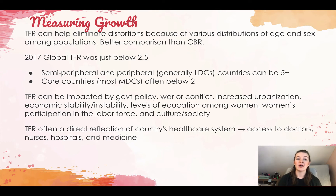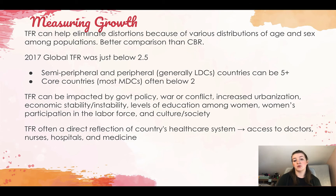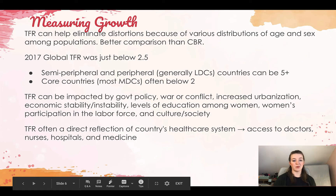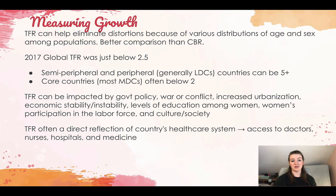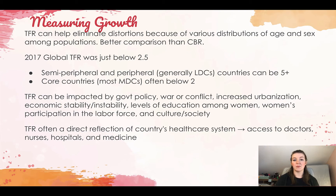Think about how many children your mother has — for the most part in the modern era, it tends to be two or fewer. TFR can be impacted by government policy, war or conflict, increased urbanization, economic stability or instability, levels of education among women, women's participation in the workforce, and culture and society. For example, China's one-child policy ran from 1979 to 2015. In the 1960s, China's TFR was 6+; in 2017, it was 1.6.